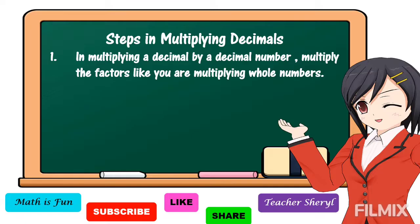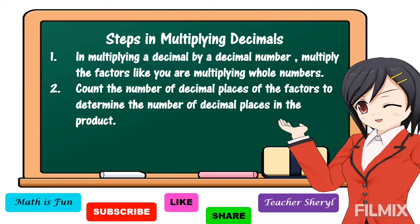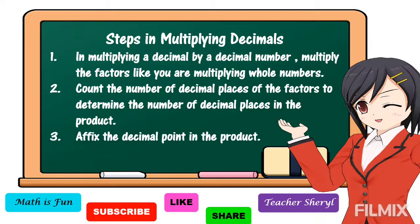When we say factors, these are numbers to be multiplied. Count the number of decimal places of the factors to determine the number of decimal places in the product. When we say product, it is the answer of multiplication. And lastly, affix the decimal point in the product.